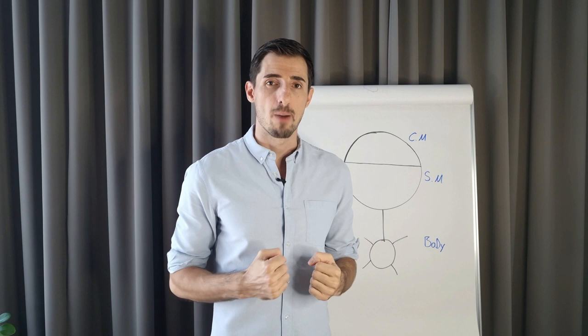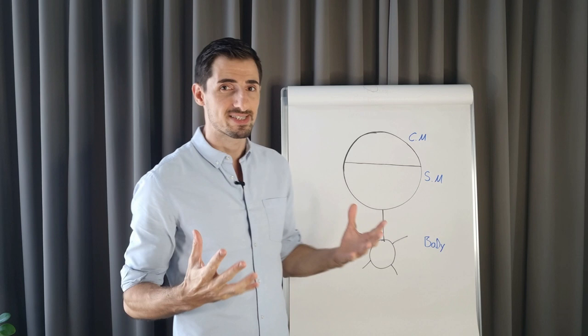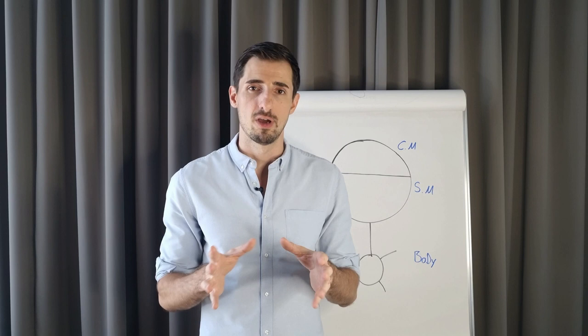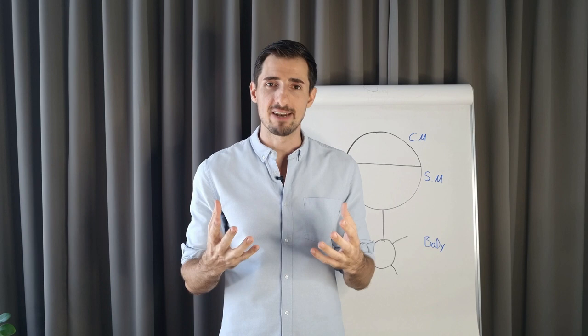This little diagram very simply represents the mind and the body. We have the conscious mind here. We have the subconscious mind here. And we have the body here. So what I'm going to do now is I'm going to break down the five-step process and what it does in your mind, in your body, in your energy, and why it's creating and manifesting the things that you want in your life.